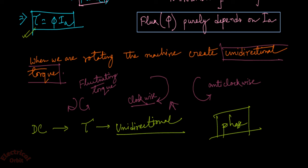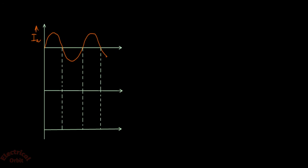Whenever we apply AC supply, which is a fluctuating quantity, we need to examine the character of the torque. When AC supply is applied, the armature current we get is AC, shown here as a sinusoidal waveform. Since flux is purely dependent on armature current, the flux waveform will be in phase with the armature current.